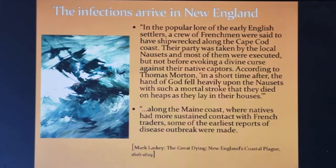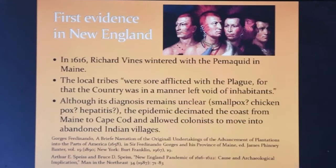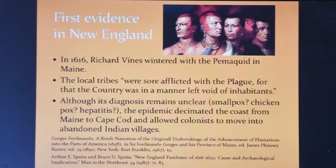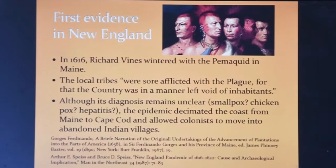Some of the earliest reports of disease occurred along the main coast where French traders had sustained contact with native people, but no one knows for certain. In 1616, Richard Vines had wintered with the Pemaquid tribe in Maine, who were then affected with the plague, which may have been smallpox, chickenpox, or hepatitis. Whether this was the origin of what came to be known as the Great Dying along the coast from Maine to Cape Cod between 1616 and 1619, it was widely reported to have killed 90% of the native population.